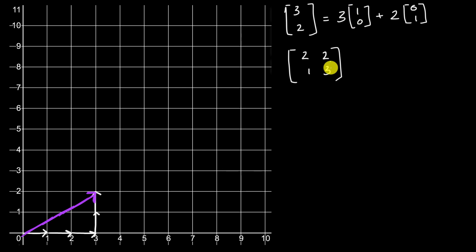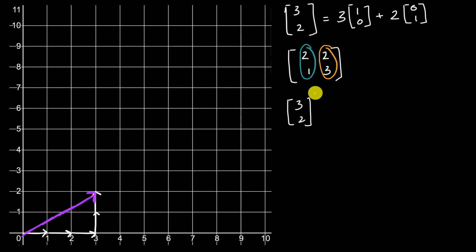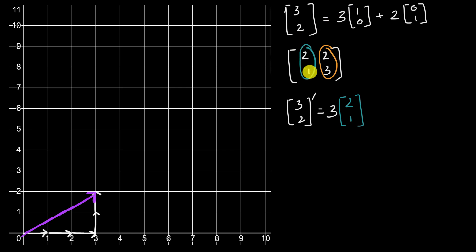Instead of having three (1, 0)'s, we are now going to have three (2, 1)'s. Instead of having two (0, 1)'s, we're now going to have two (2, 3)'s. So the image of our original vector — I'll put a prime here — is going to be three times (2, 1), that's the image of the (1, 0) unit vector under this transformation, plus two times (2, 3), which is the image of the (0, 1) vector under this transformation.